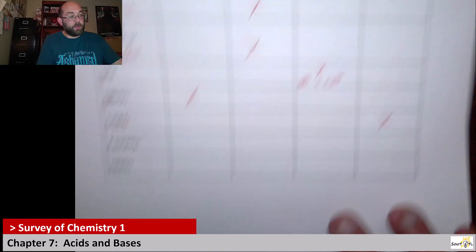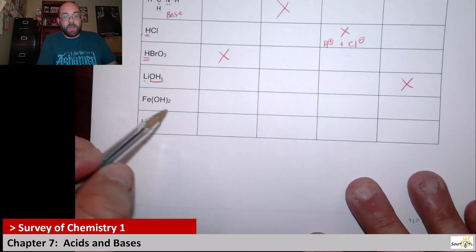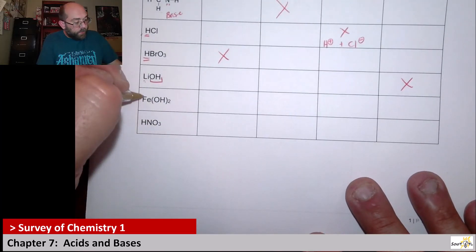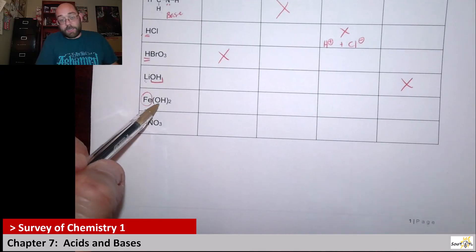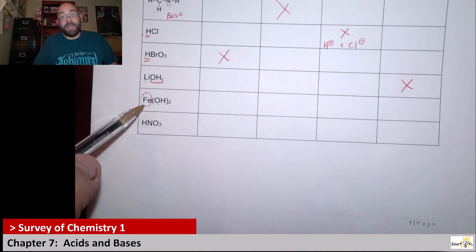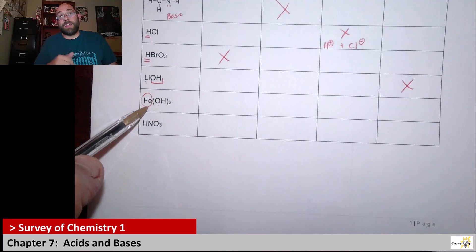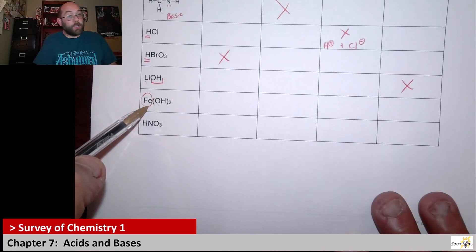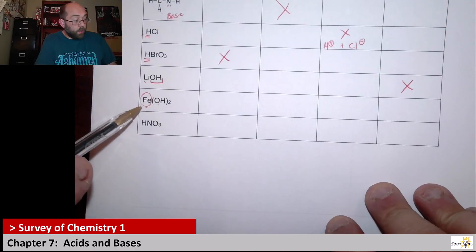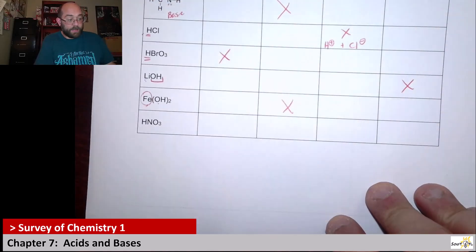Now if we look, we have iron hydroxide. Iron hydroxide means it's probably going to act like a base. But the iron is actually a transition metal. It's not in our group 1A or group 2A column. So this is not a strong base. This is a weak base.